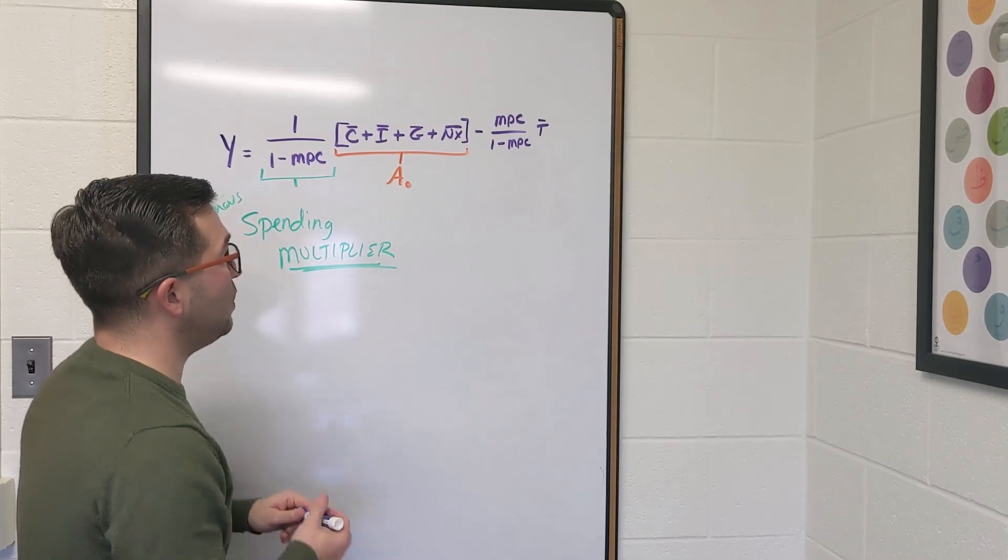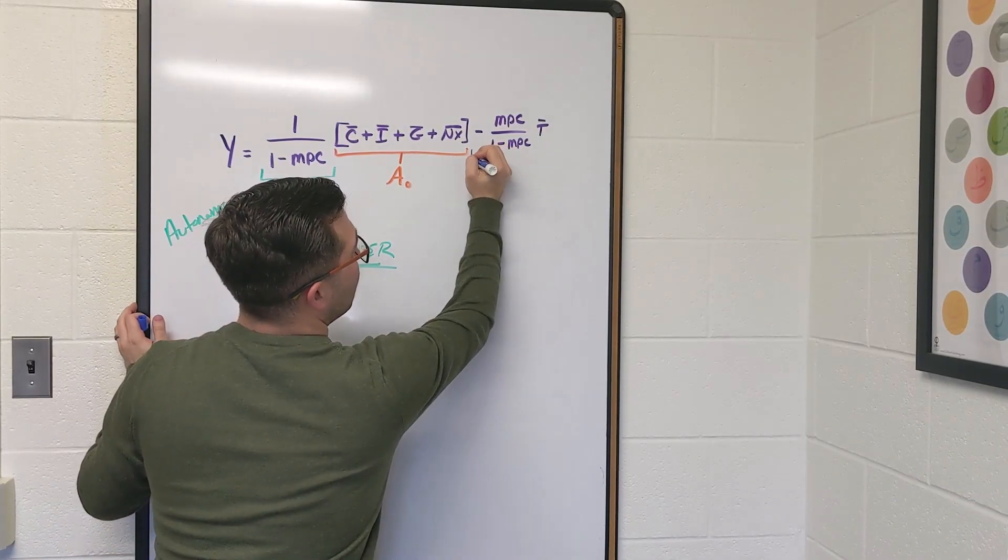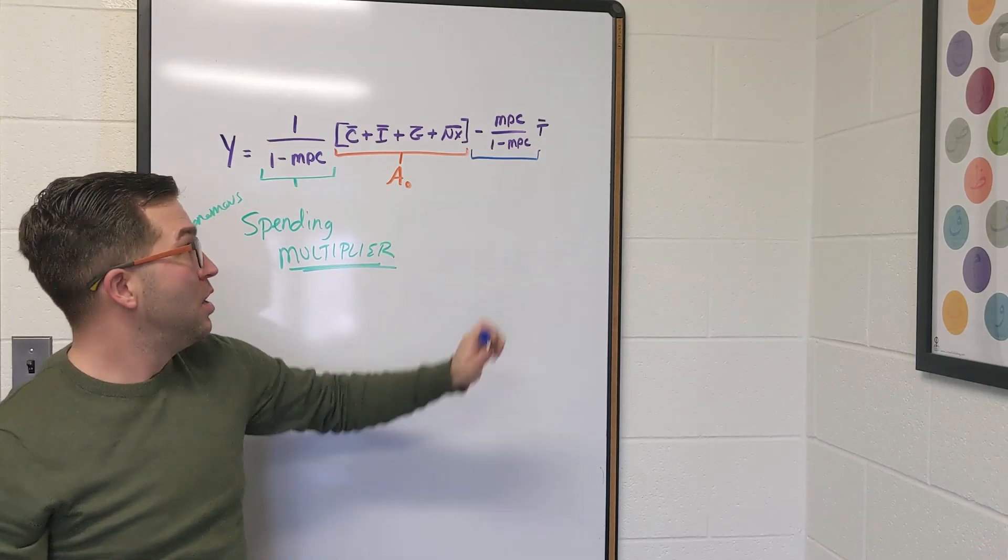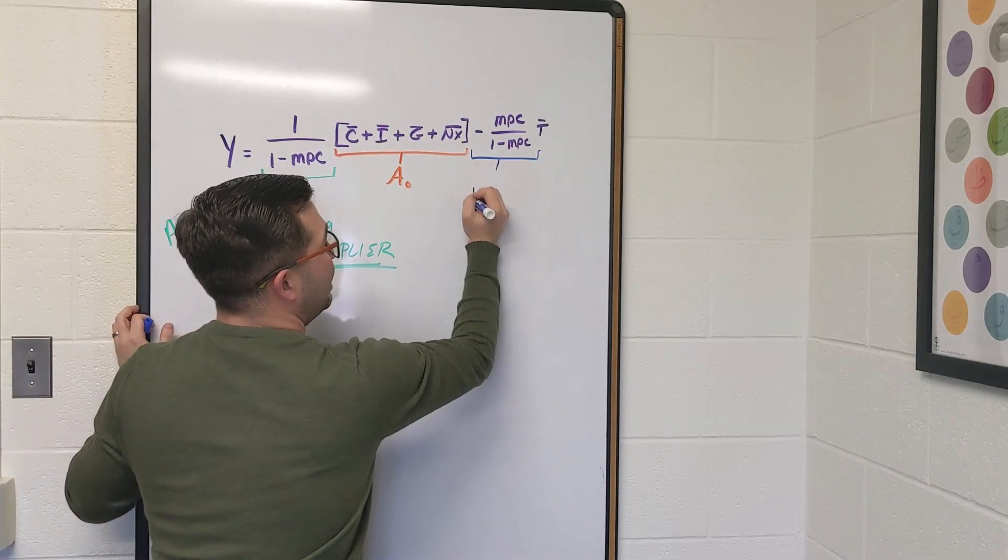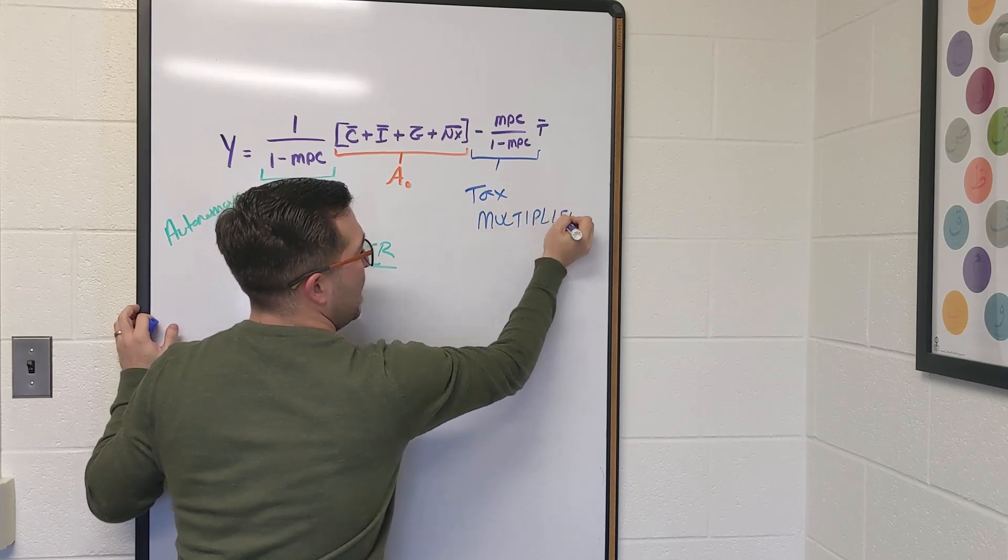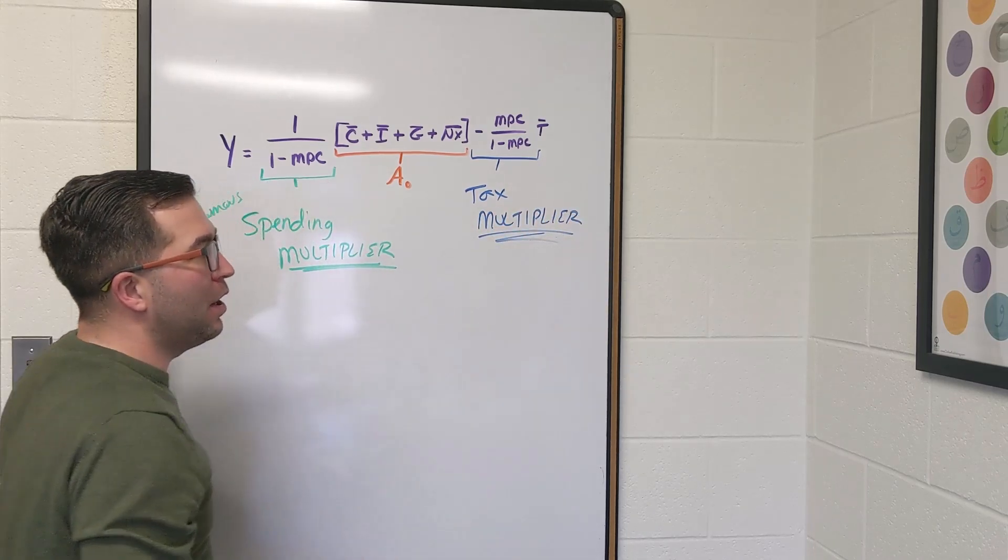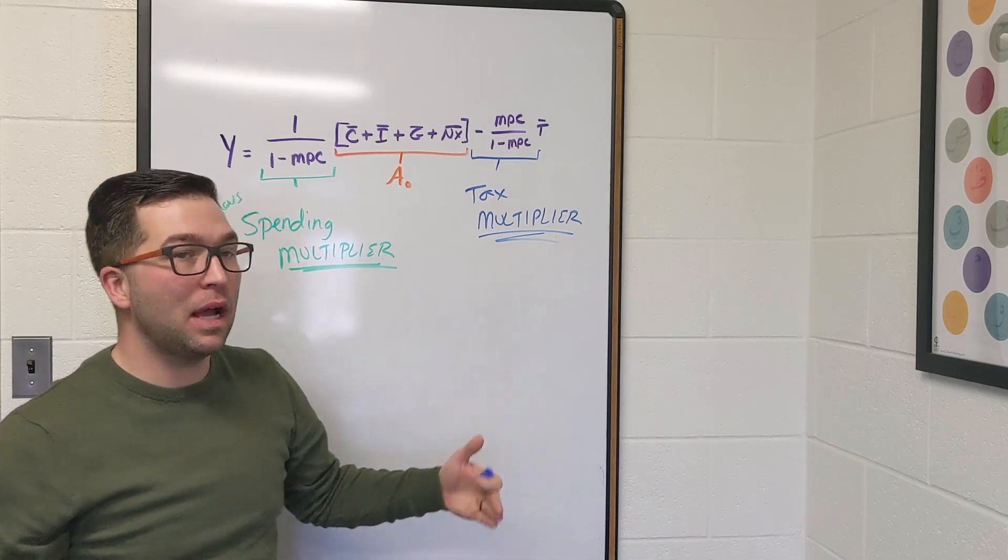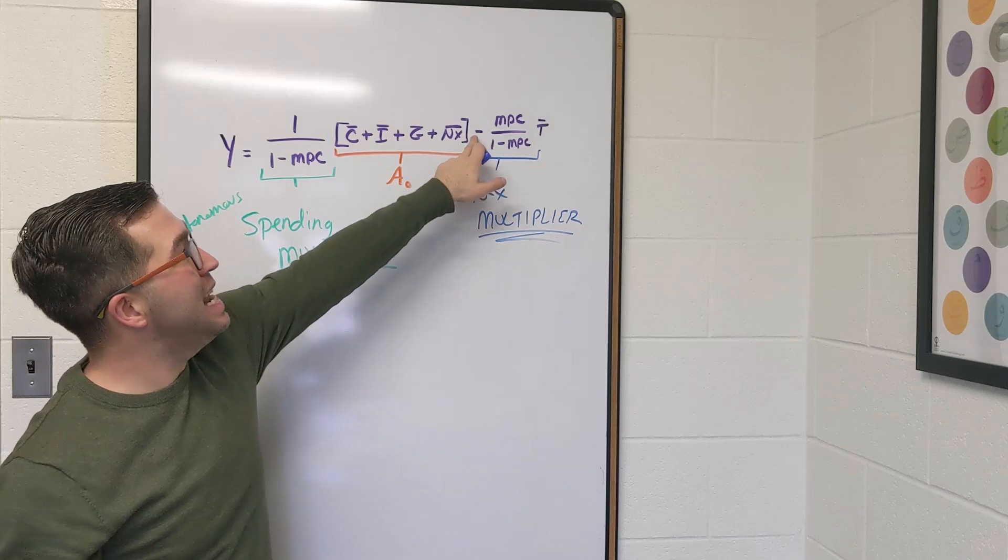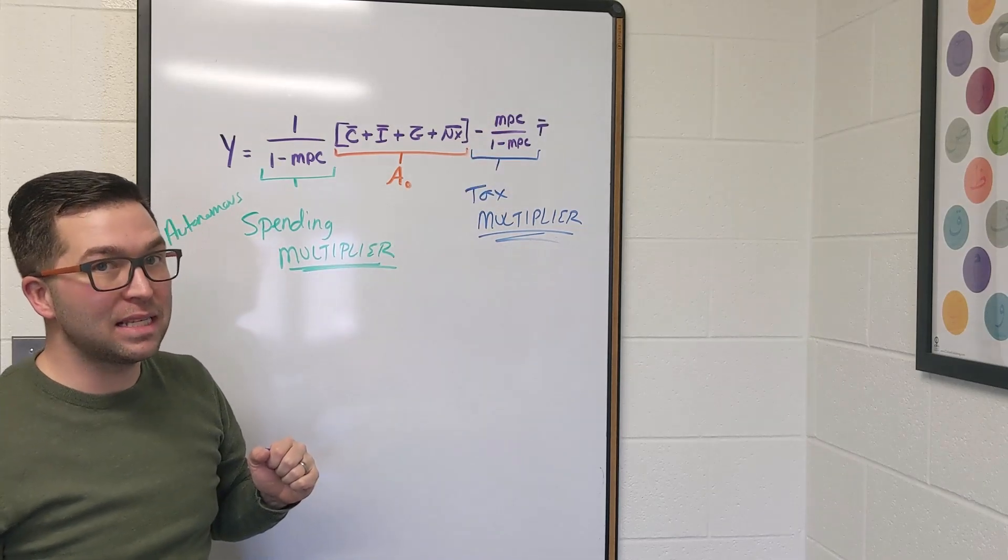Lastly, we're going to care about this right here. This is connected to our taxes. So this is going to be our tax multiplier. Again, underlining this idea that it is a multiplier because if taxes change, then GDP is going to change by a negative MPC over one minus MPC.